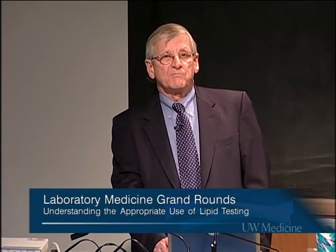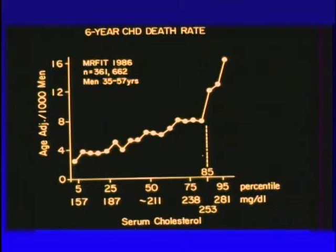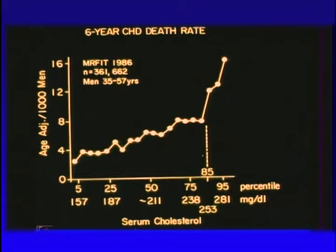This slide shows data from the mid-1980s. More than a third of a million men had lipids measured and were followed for six years for coronary heart death rates. On the vertical axis we have the age-adjusted per-thousand men six-year coronary heart disease death rate as a function of increasing cholesterol at baseline. There's a marked increase with increasing cholesterol. We've known since around 1905-1910 that people with familial hypercholesterolemia had very high cholesterol and premature coronary disease. These are the data from which the National Cholesterol Education Program guidelines started.